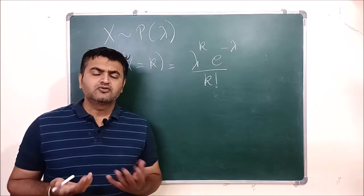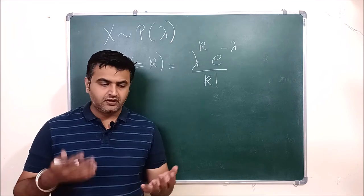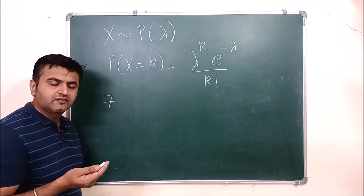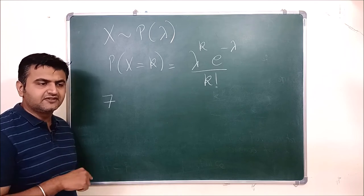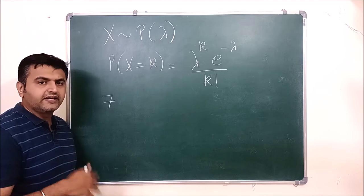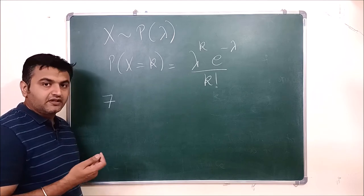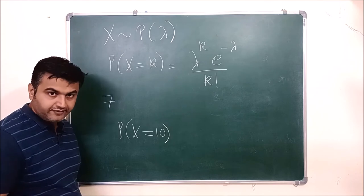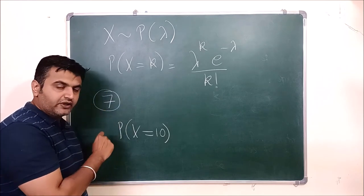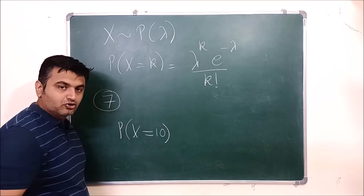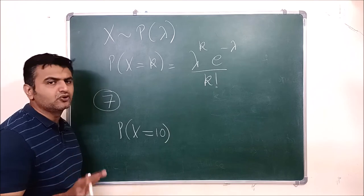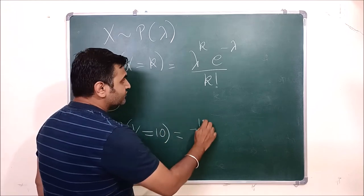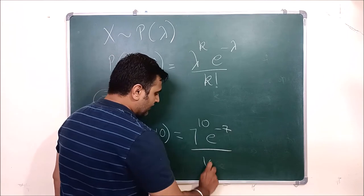Let's take an example. Suppose the average number of storms hitting your city per year is 7. Question: what is the probability that next year 10 storms will hit your city? The average is given as lambda equals 7, and we want K equals 10. So the answer is: 7 raised to 10, times e raised to minus 7, divided by 10 factorial.